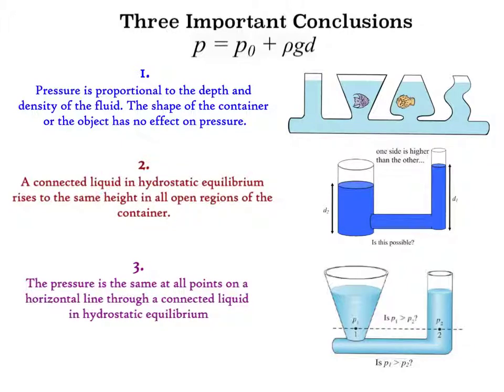And third, the pressure is the same at all points on a horizontal line through a connected liquid in hydrostatic equilibrium. So, in this picture here, the conical tube holds more liquid above the dotted line and therefore has a greater weight. So, is pressure 1 at this point greater than pressure 2 at this point? Well, to answer that, we have to think about the pressure at the bottom of the tubes. If pressure 1 were larger than pressure 2, the pressure at the bottom of the left tube, then, would be larger than the pressure at the bottom of the right tube. This would cause the liquid to flow until the pressures were equal. Therefore, the pressure is the same at all points on a horizontal line through a connected liquid in hydrostatic equilibrium.